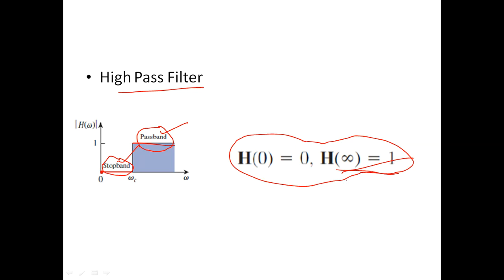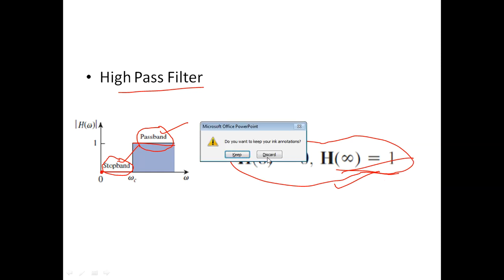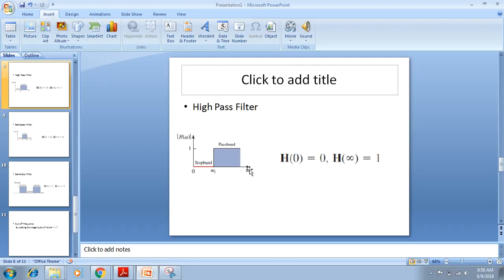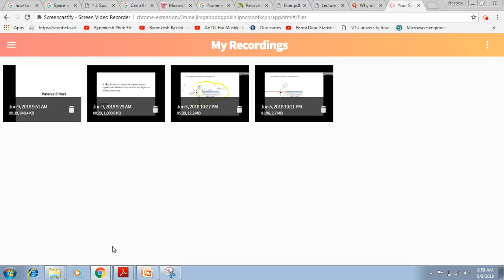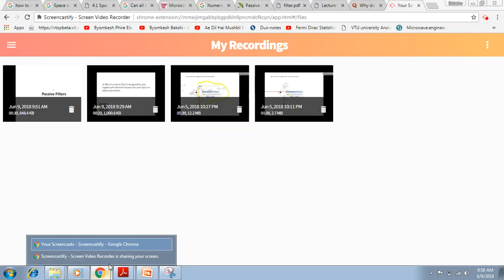For a high pass filter, at omega equal to zero the output voltage is zero so H(0) = 0 (stop band), and for very high omega the magnitude equals one so H(∞) = 1 (pass band). In my next video I will cover the band pass and band stop filters, and then solve some numerical problems based on this topic. Thank you for watching.